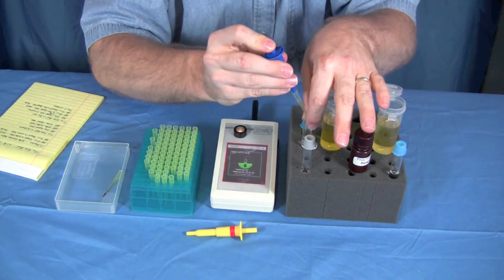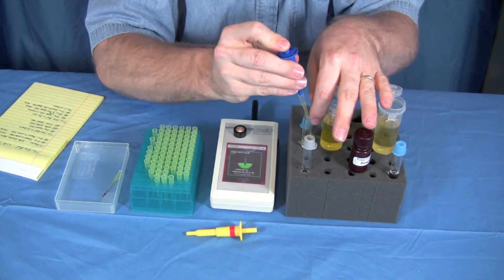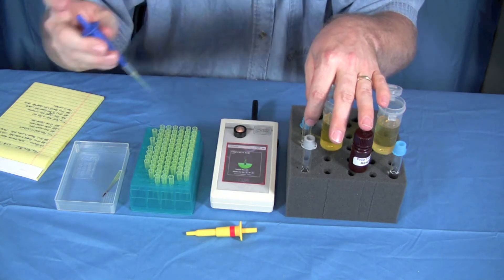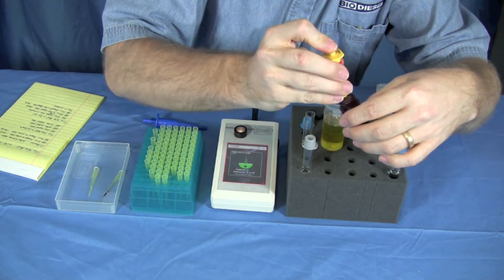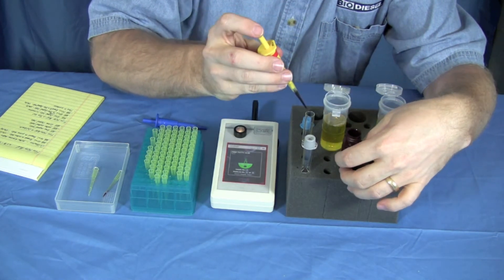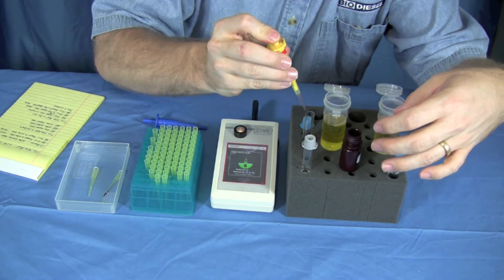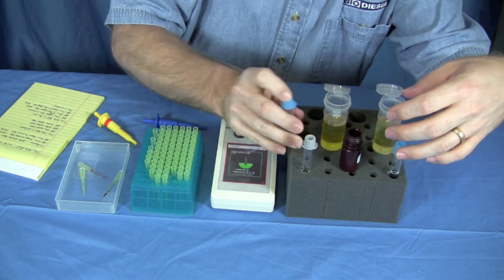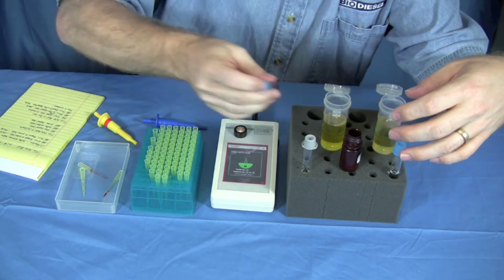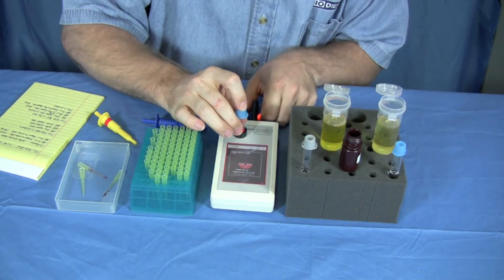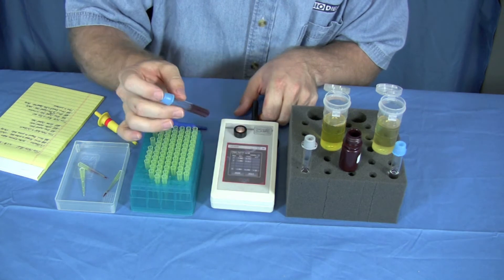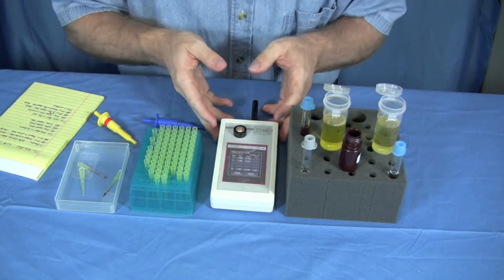We put 100 microliters in our sample there. Make sure that you don't get bubbles. Put it in and cap it and shake this fairly vigorously. Put it in, remove it, put it in, remove it, and the test is done.